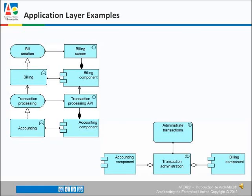In the application layer, looking at the example on the left, the accounting application component — you'll see the notation is the same as in UML — is assigned to the accounting function, which uses the notation of a chevron. This accounting function realizes the transaction processing application service, which is assigned to the transaction processing API, which is an interface. The transaction processing service is used by the billing function, which is assigned to the billing application component. This billing function realizes the bill creation service, which is assigned to the billing screen, which is an interface.